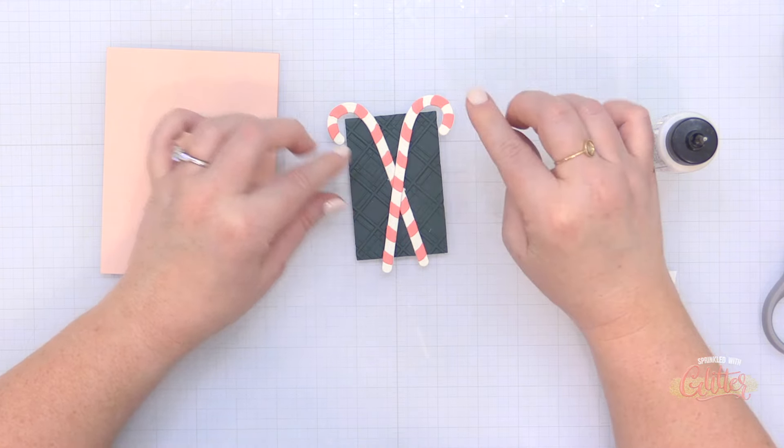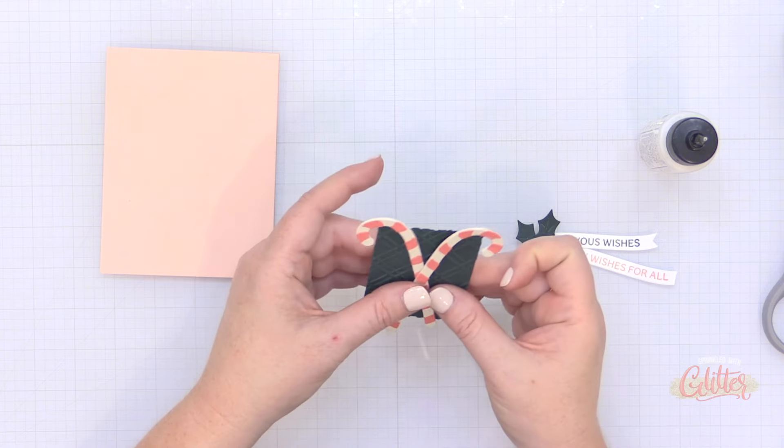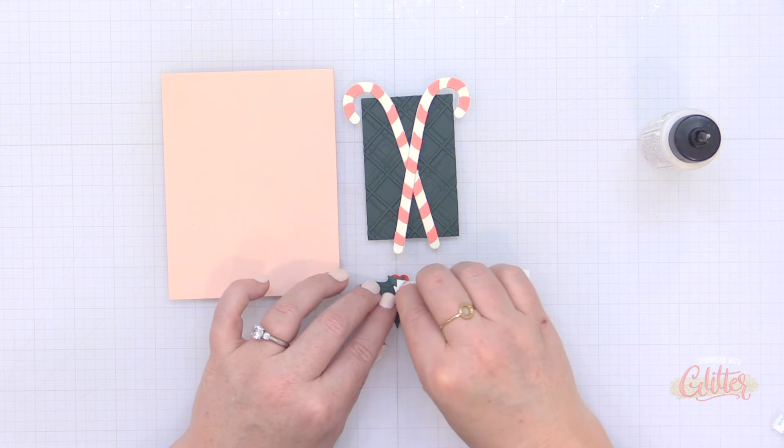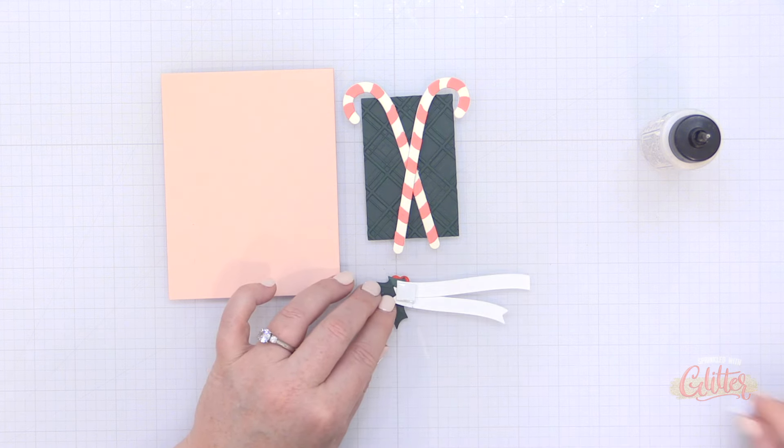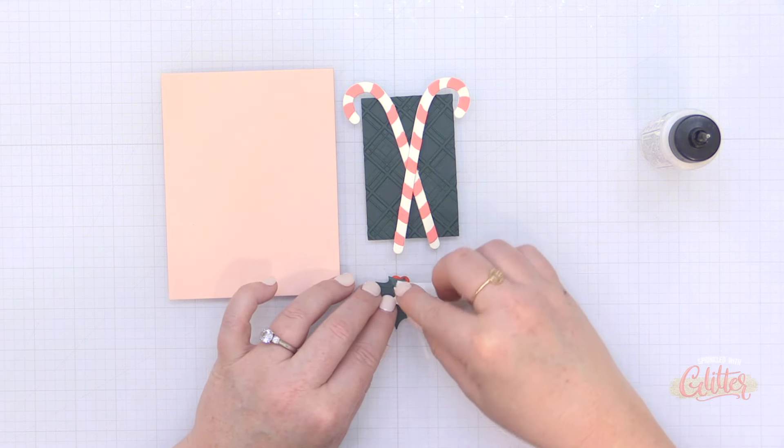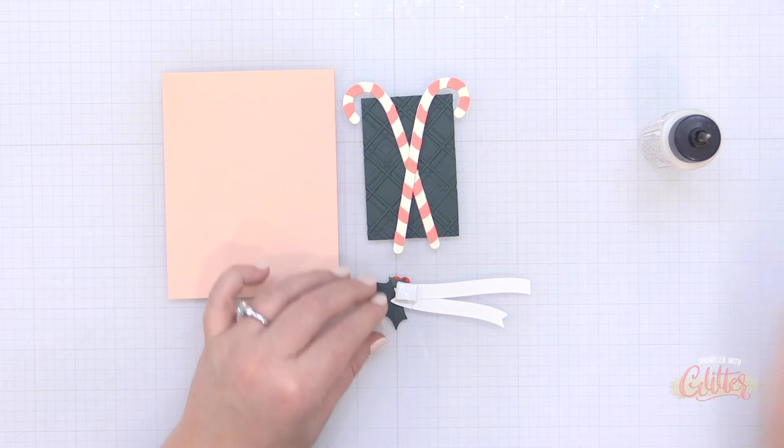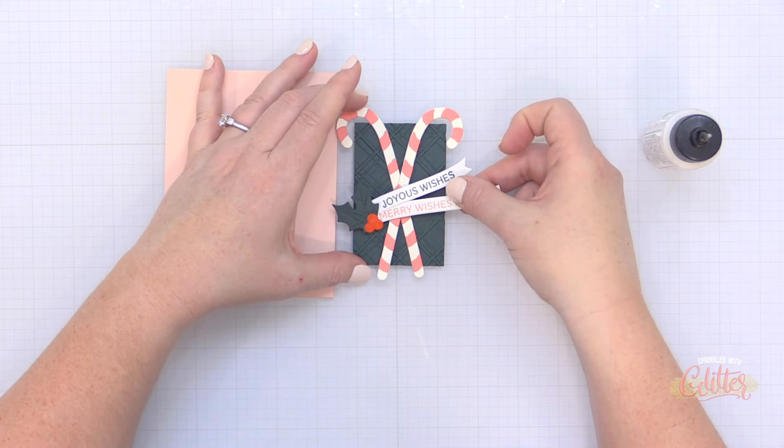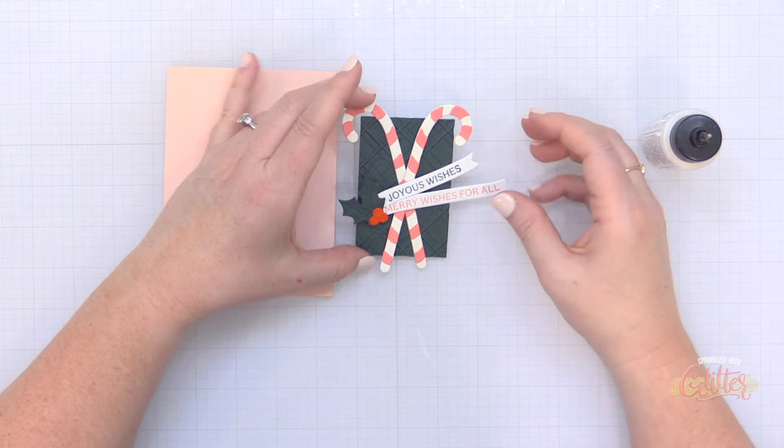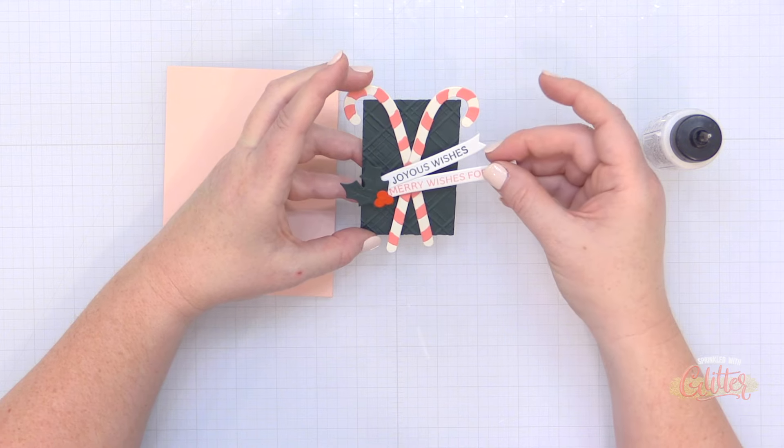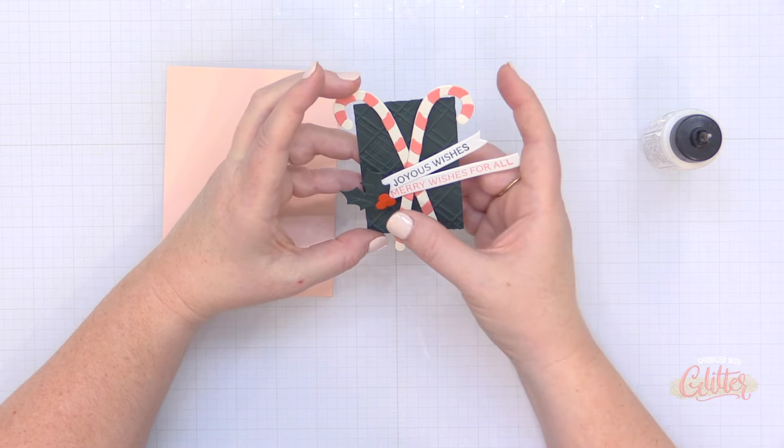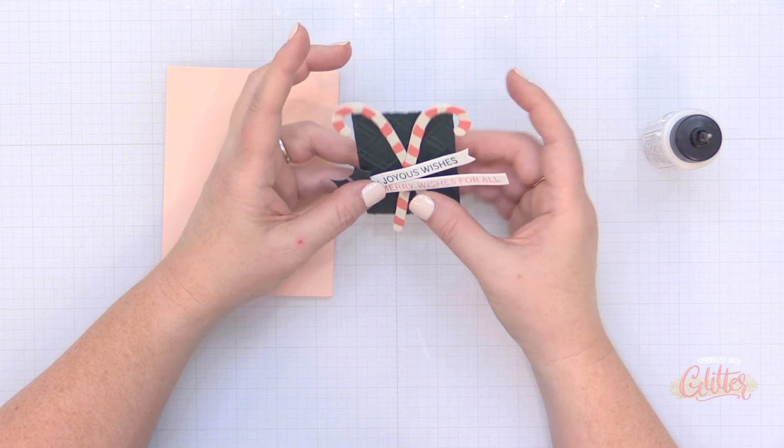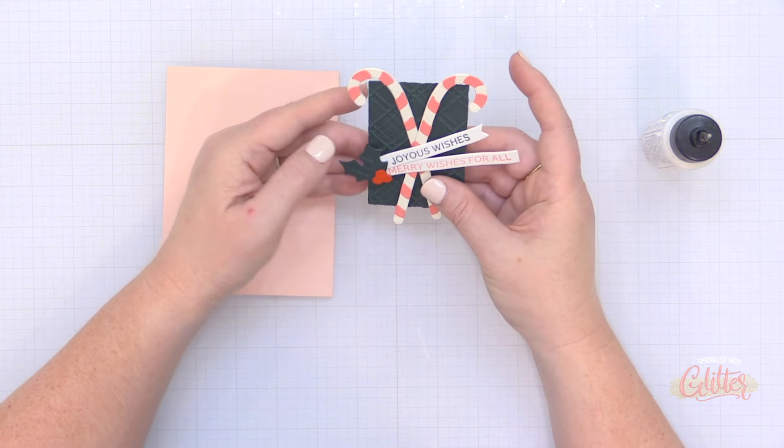Now I did use a double layer of foam adhesive behind these sentiment strips to give them a lot of dimension so that they could come up and over the top of those candy canes. Because keep in mind those candy canes are four layers thick so I wanted to make sure there was plenty of clearance. And as I added these I also shaped them around my fingers to add that waving motion to the banners. Now once I got that into place I really felt like this card needed some element of shine.